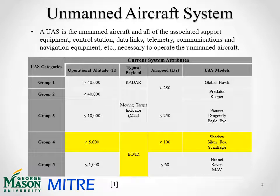What is an unmanned aircraft system? It's the unmanned aircraft and all associated support equipment: control station, data links, telemetry, communications, navigation equipment, and everything else necessary to operate the unmanned aircraft. As you can see in the table here, UAS are broken into five groups. I'd like to point you to the fourth group, the highlighted group, where the operational altitude is less than 5,000 feet and airspeed is less than 100 knots. They are typically equipped with an electro-optic infrared sensor. Of this group, we have chosen to focus on the RQ-7B Shadow.